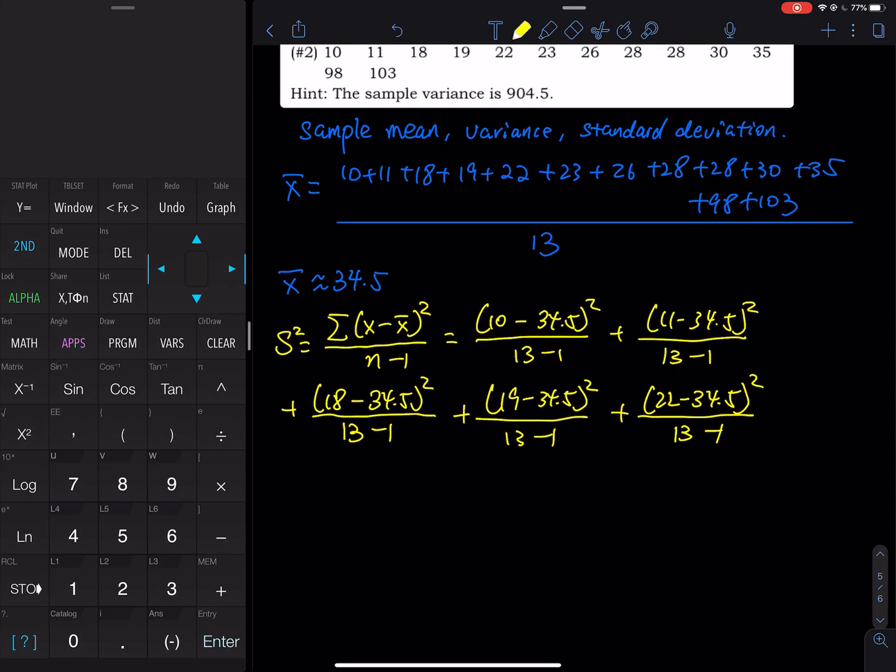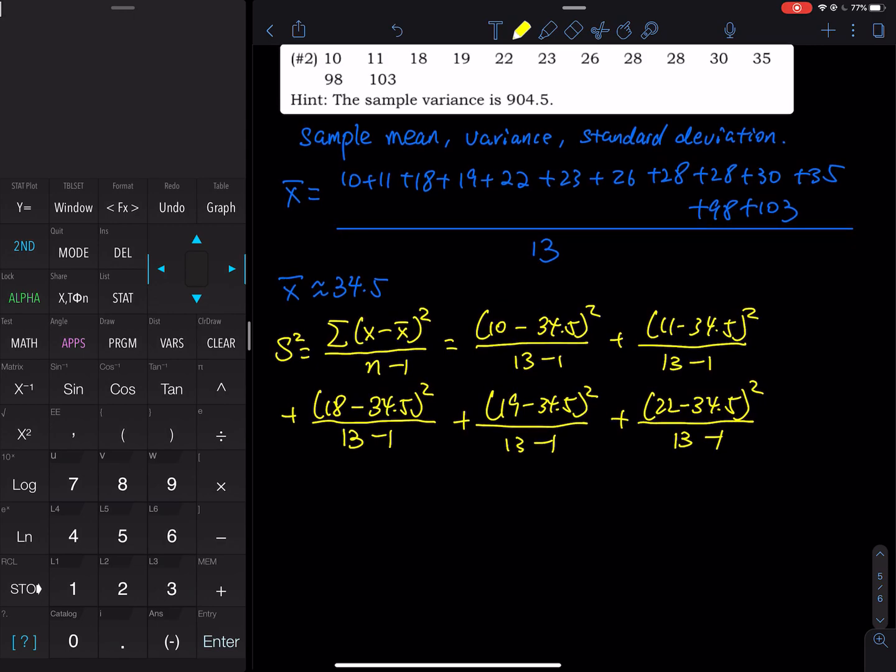And then this one, let me save some time because I want to spend more time on the calculator. So we just switch to 22 and then I'll let you write the rest. And then the last one is (103 - 34.5)² divided by 13 minus 1.